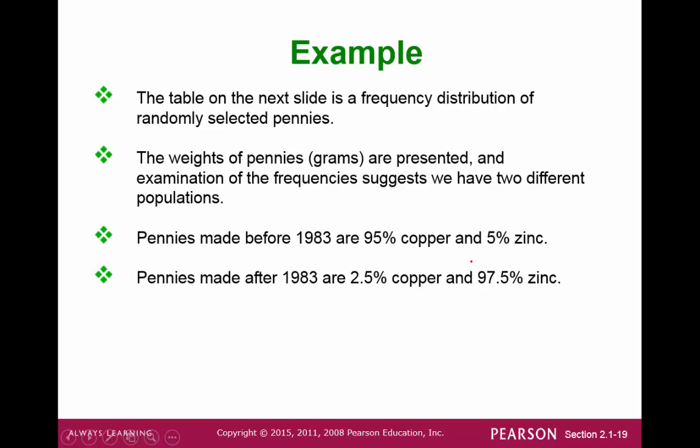So, for example, let's take a look at a frequency table of weights of pennies. It turns out that before 1983, the pennies were made mostly of copper. Between 83 and now, most of the pennies have not been made mostly of copper but by zinc.